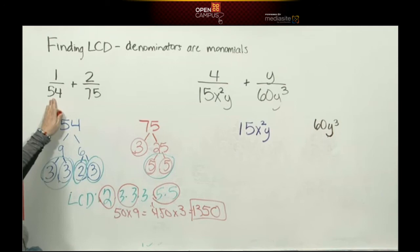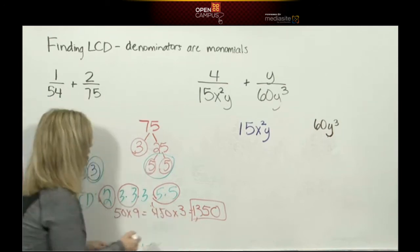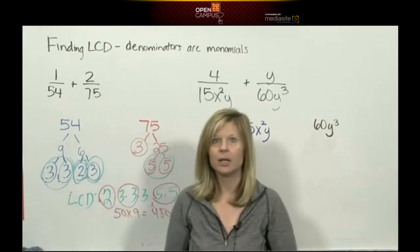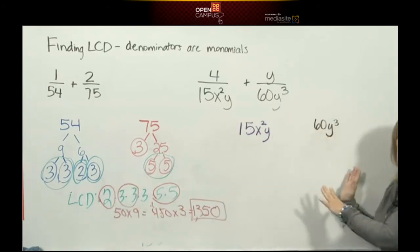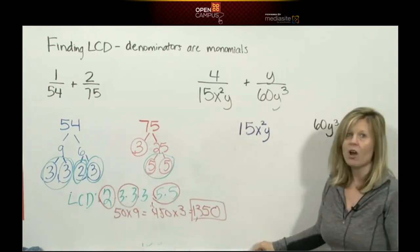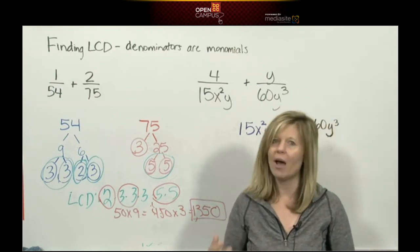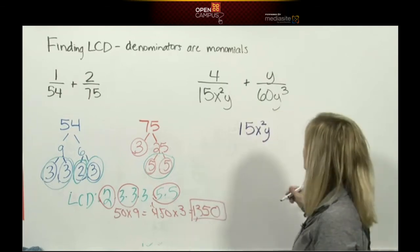Now what's great about this method is if it works in arithmetic, it does the same job in algebra. If you're trying to find a least common denominator and you have an algebra expression, all you have to do is factor it into primes. So here we go: I have the monomial 15x²y.